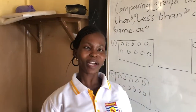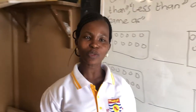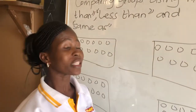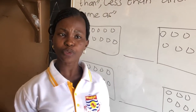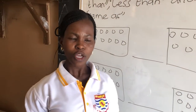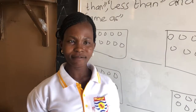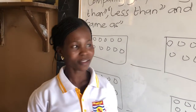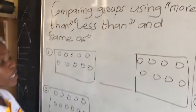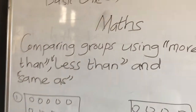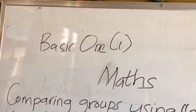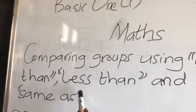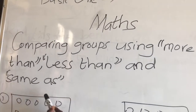Hello my learners, welcome back again to our visual lesson. We started with the fourth numbers, comparing words, groups, using more than, less than, and same as. So we are going to look at these words: comparing groups using more than, less than, and same as.